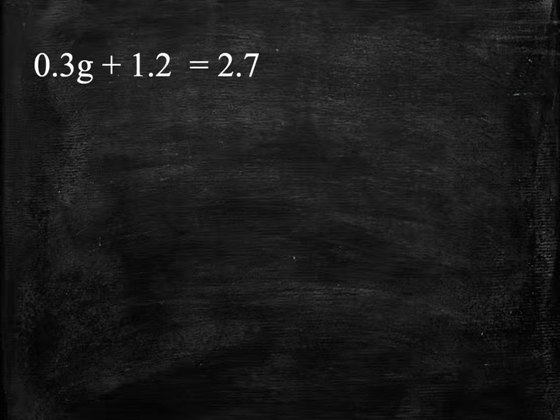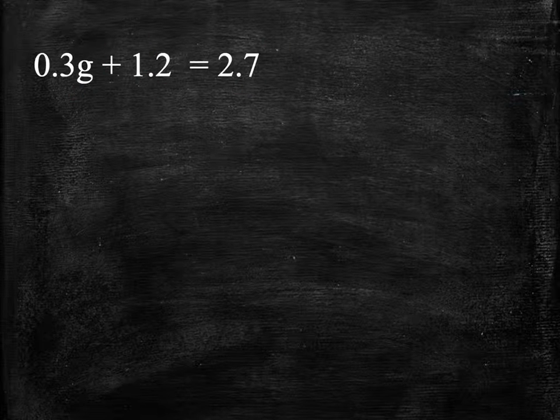Now this one you can see is actually easy to eliminate all the decimals. You have a tenths place, tenths place, tenths place. I'll multiply both sides by 10, so times 10. Remember we're going to do it kind of like the distributive property, so you've got to multiply both items. So that makes 3g, 10 times 1.2 is 12, is equal to 27.